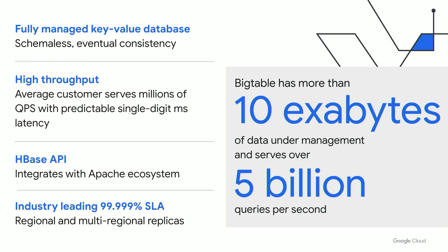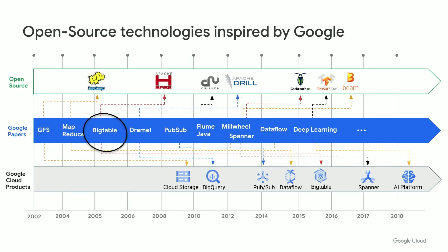Bigtable fully embraces open source by providing an open API with Apache HBase, making it open source friendly and workload portable. Many of the open source distributed systems you may be familiar with are modeled off of technologies innovated at Google. Specifically, with open source NoSQL databases, a family tree of them drew inspiration from Bigtable and began surfacing in 2008 — including the release of Apache HBase, Apache Cassandra, and Apache Accumulo, which was developed by the NSA. All of these key value databases have workloads built on NoSQL and these use cases are usually a good fit for Bigtable.